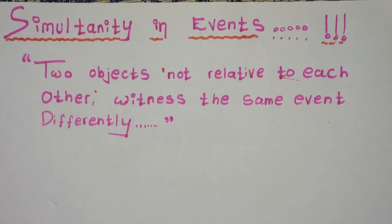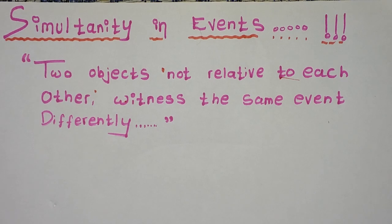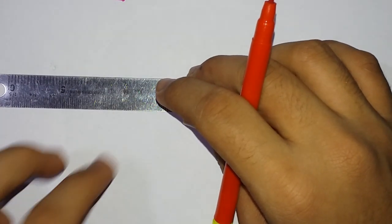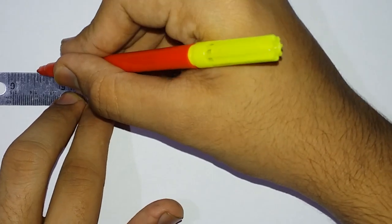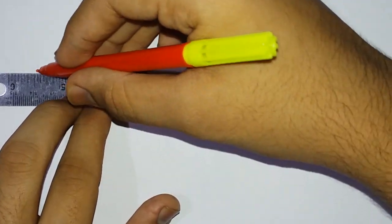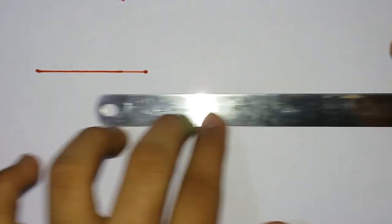Now let's take an example for a better understanding of simultaneity in events. Alright guys, let's get started. Suppose here I have a platform.